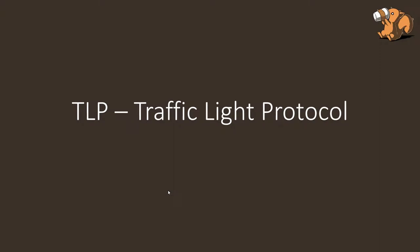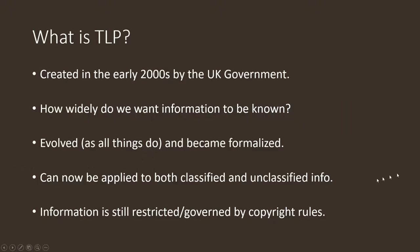Today we're going to cover the Traffic Light Protocol, also known as TLP. It was created in the early 2000s by the UK government and covers how widely we want information to be known. It has evolved and become quite formalized — the same TLP rules can now be applied everywhere, to both classified and unclassified information, though classification levels still outrank TLP levels in the InfoSec and government community. Information is also still governed by copyright rules.